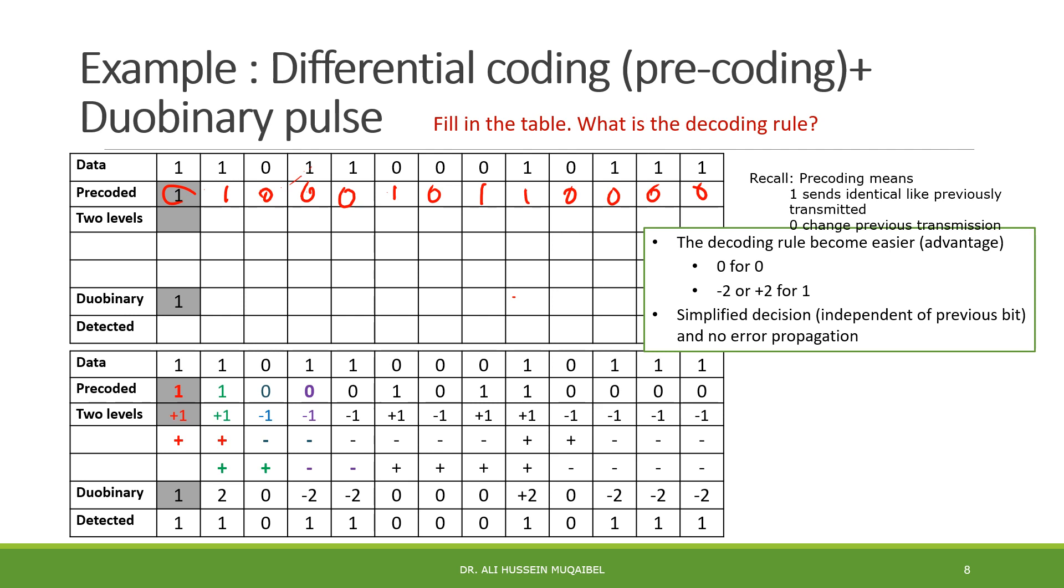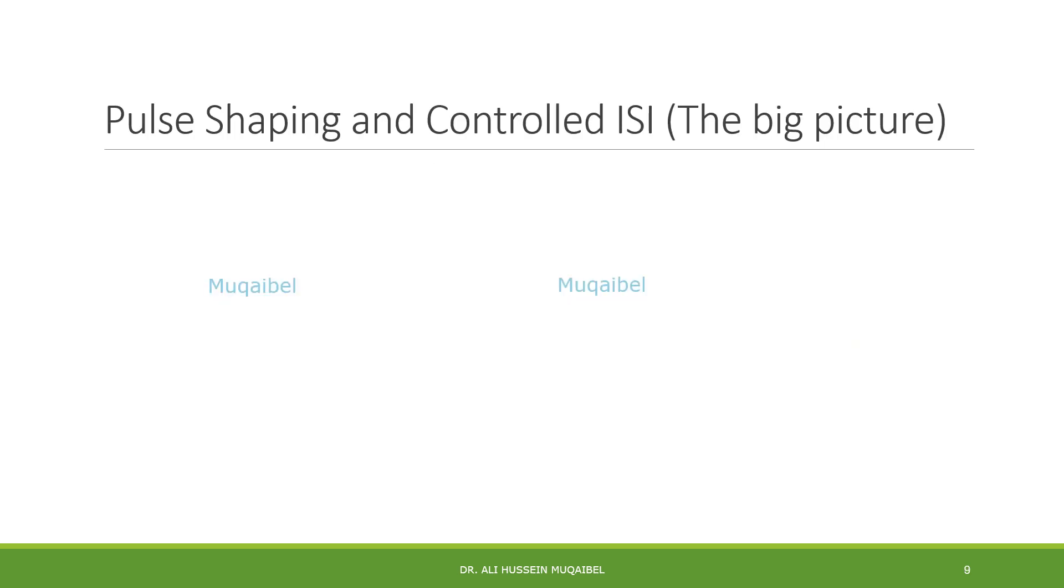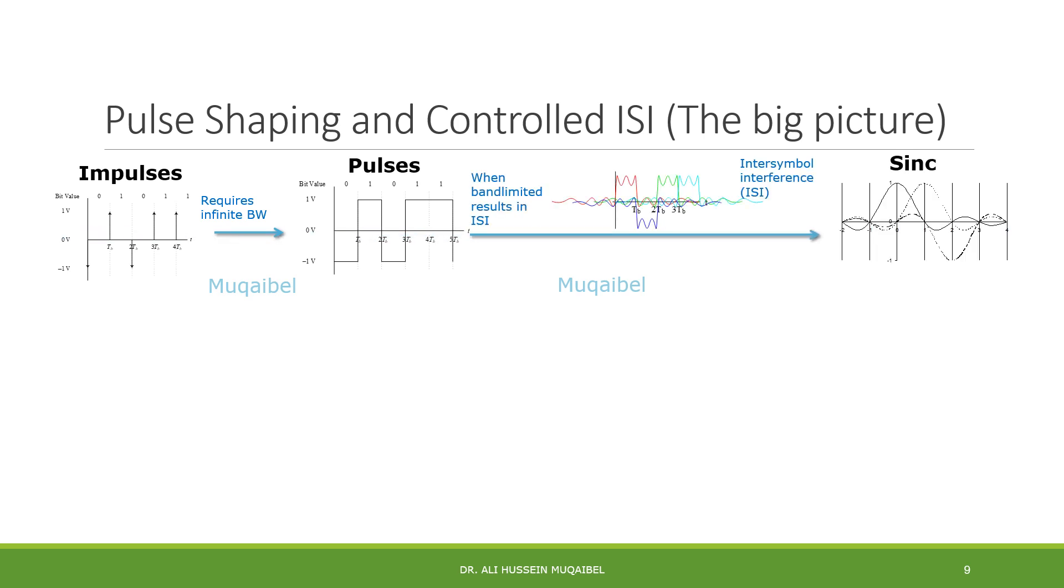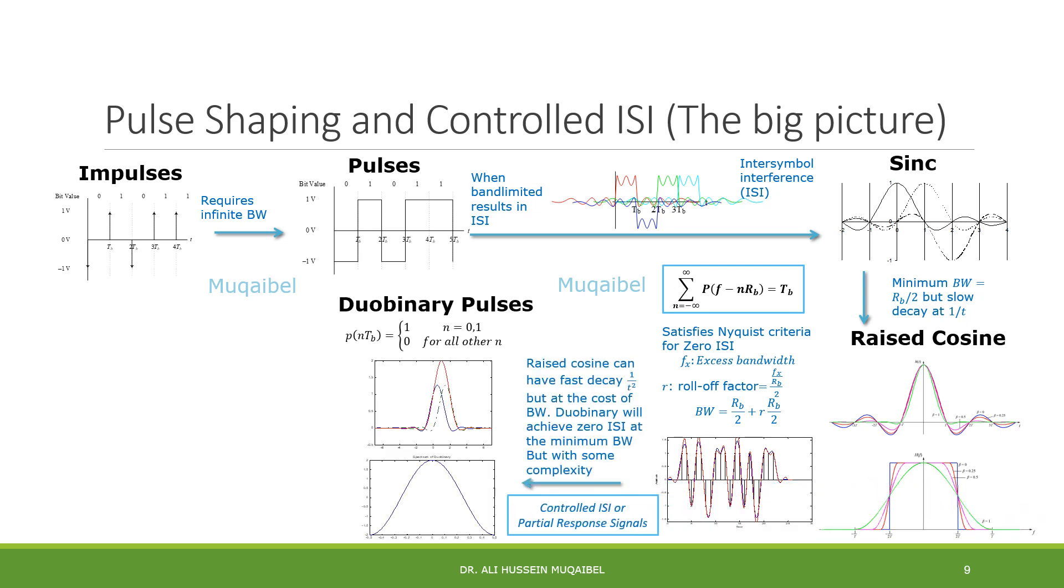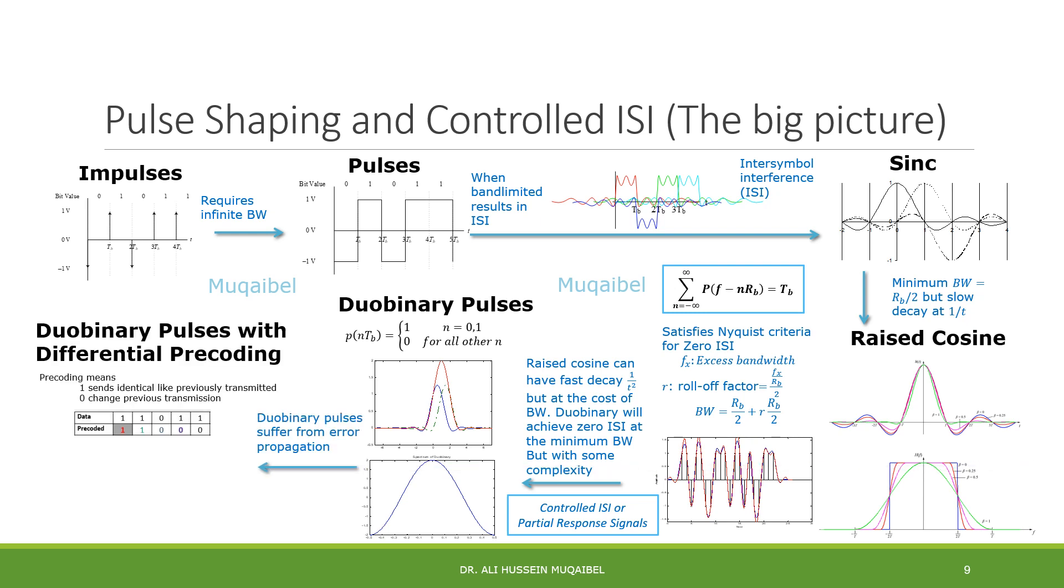Now, we have covered controlled ISI with duobinary pulses. And also, we looked at pre-coding with duobinary. Now, in this slide, I'm sharing this slide in the next video. It shows you how we started with sending impulses. Then we went into pulses. We found that there's ISI problem. We introduced the solution of sinc. Then, we went from sinc because of the large tail into raised cosine. This is the first solution for ISI was pulse shaping. And then, we found that this is required raised cosine waste bandwidth. We went from there into the duobinary pulses. We found that duobinary pulses achieves zero ISI with minimum bandwidth. However, it introduced error propagation. Then, we went into duobinary pulses with pre-coding. These are the main solutions. This slide is clearly explained in the next video. Thank you for paying attention.